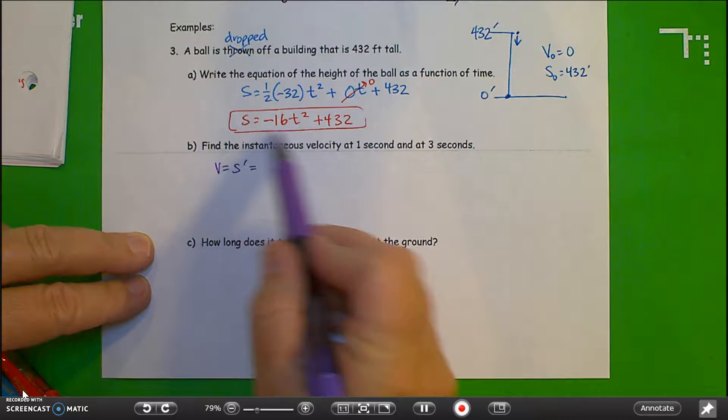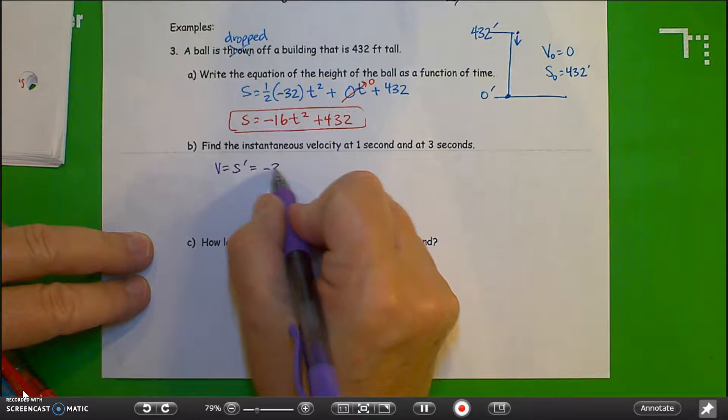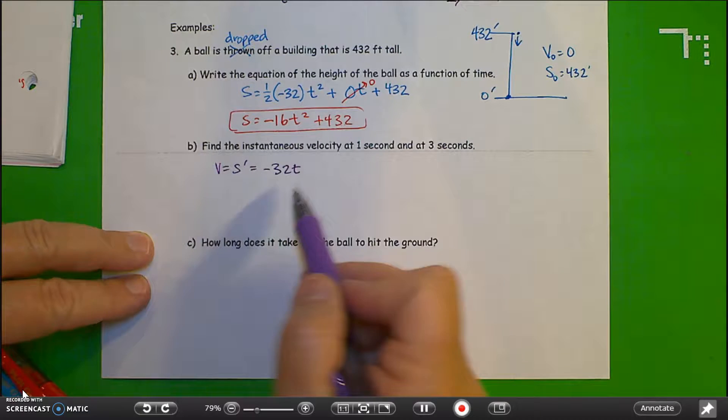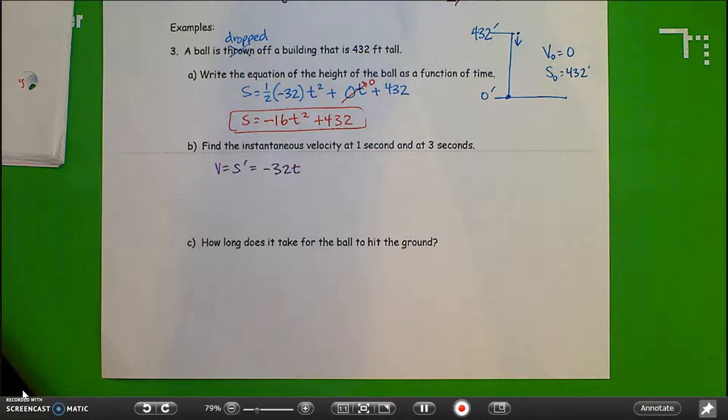So we'll just take the derivative of this. So we get minus 32t. And that becomes zero. So the velocity is just simply minus 32t.